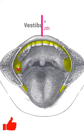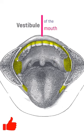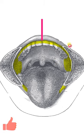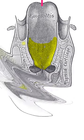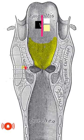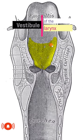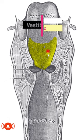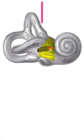the oral vestibule is horseshoe-shaped and is located between the dental arches and the deep surface of the cheeks and lips. In the larynx, the vestibule is the upper chamber of the laryngeal cavity between the laryngeal inlet and the vestibular folds.